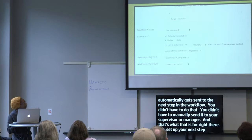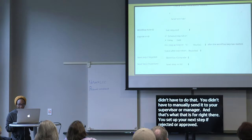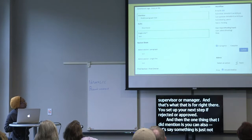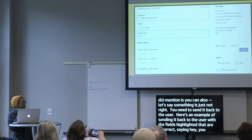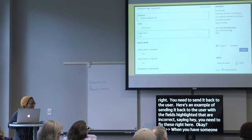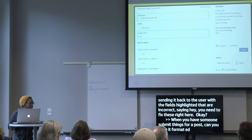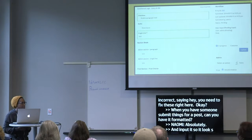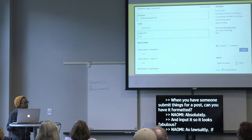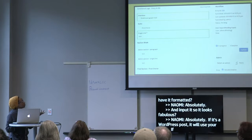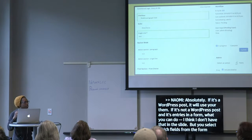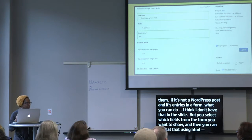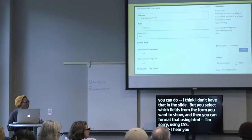If something is just not right, you can send it back to the user with the incorrect fields highlighted — saying 'you need to fix these right here.' If it's a WordPress post, it's just going to use your theme. If it's not a WordPress post and it's entries in a form, you select which fields from the form you want to show and format that using CSS. You can have it use the default styles in your theme, and specify top, side, and bottom areas where fields go.